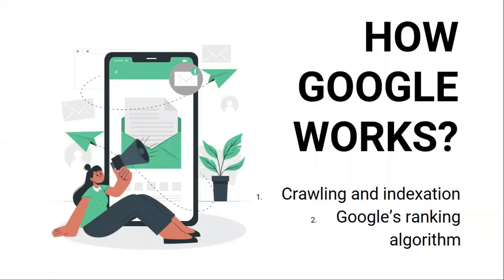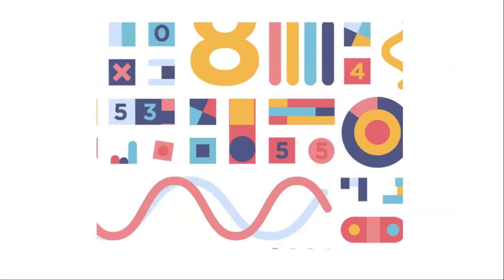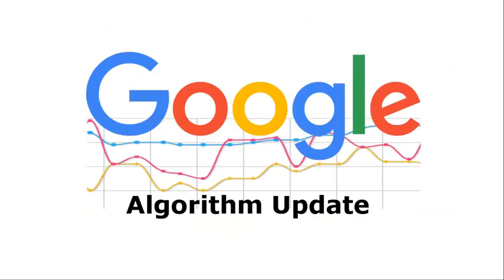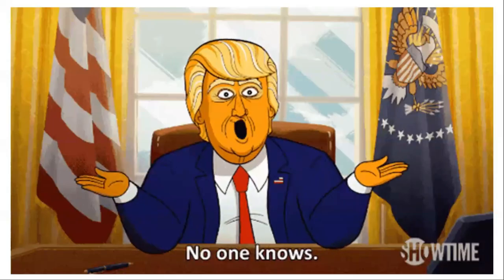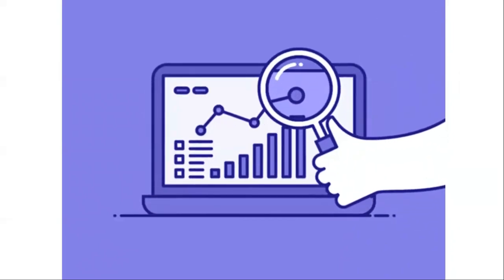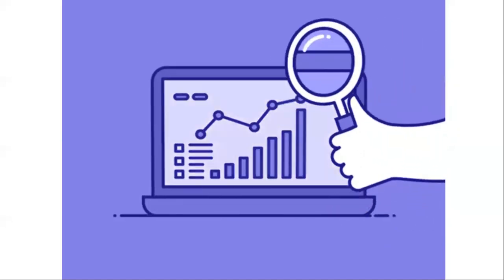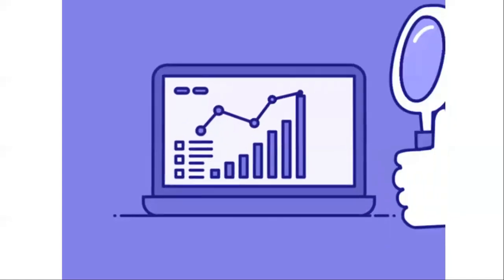Now if Google returned every result that merely mentioned your words on the page, you'd end up with really bad results. Google has hundreds of ranking signals and they make tweaks to their algorithm at least 500 to 600 times per year. So to be frank, no one knows exactly how their algorithm works. But they have given us clues and guidelines to improve our understanding, and I want to cover a few of the most important factors that you'll need to understand from a fundamental standpoint.